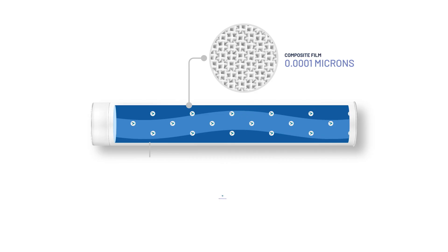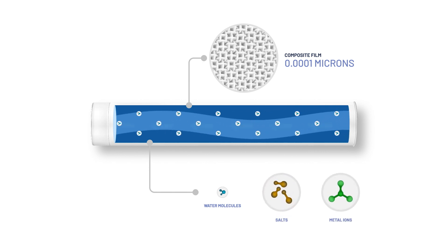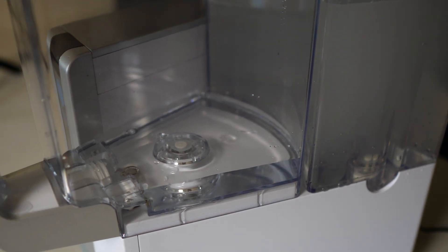Water waste is another key difference, and it's something you'll only encounter with RO systems. The reverse osmosis process inherently wastes water, because the system flushes away contaminants rejected by the membrane. The good news is that RO technology has come a long way — in the past, it was common to waste up to four gallons to purify one, but today many modern RO systems waste as little as one gallon for every two or three gallons purified. Water filters don't waste any water at all.